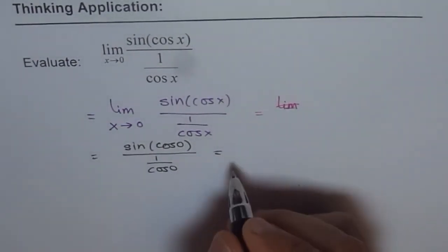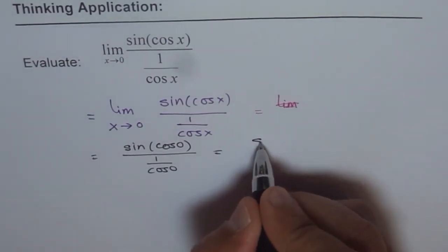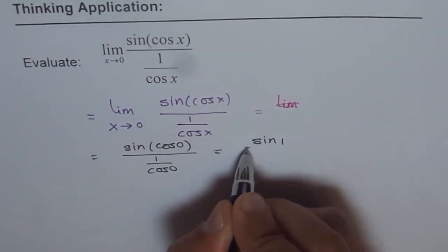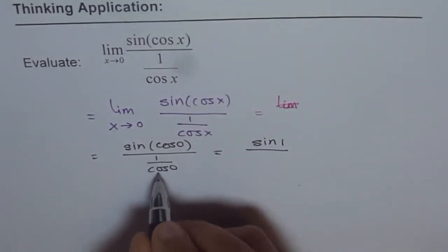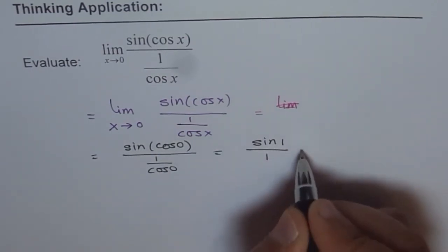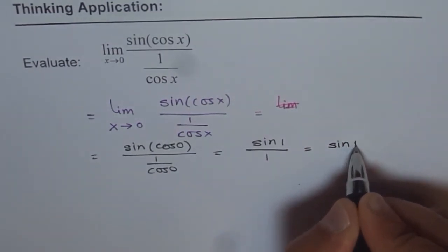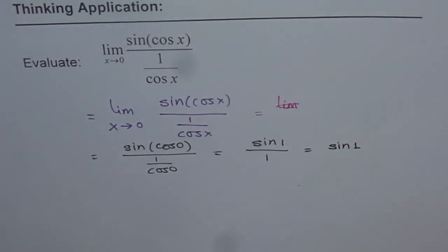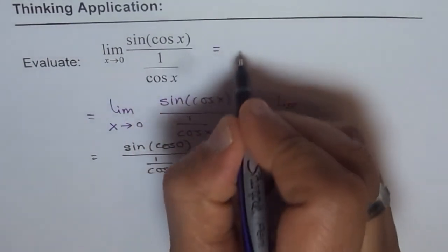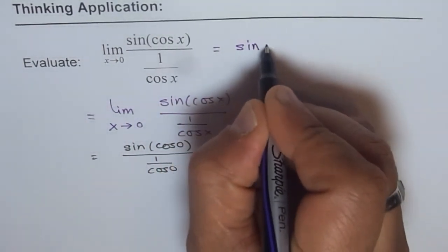What is cosine of 0? Cosine of 0 is 1. So we get sine of 1 over cos 0 is 1, over 1. So the answer is sine 1. Do you see that? That is the answer for this question. So we get our answer as sine 1.